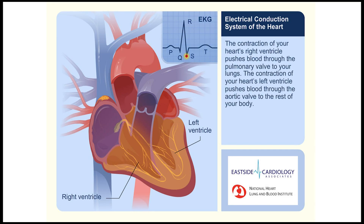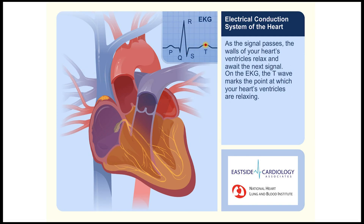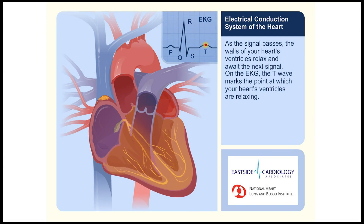The contraction of your heart's right ventricle pushes blood through the pulmonary valve to your lungs. The contraction of your heart's left ventricle pushes blood through the aortic valve to the rest of your body. As the signal passes, the walls of your heart's ventricles relax and await the next signal.